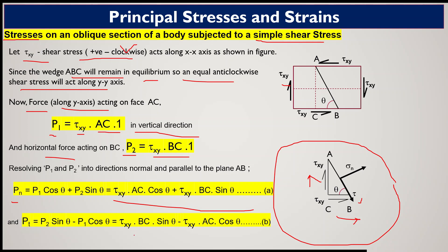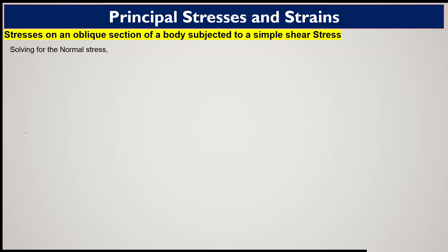Equation B (tangential force): Pt = tau_xy·BC·sin(theta) − tau_xy·AC·cos(theta). Continuing to solve for the normal stress sigma_n: sigma_n is obtained from the normal force Pn divided by the area of plane AB (AB × 1, since thickness is unity).